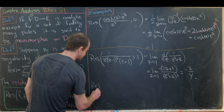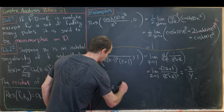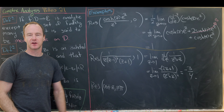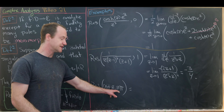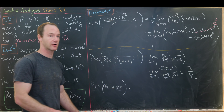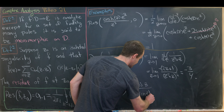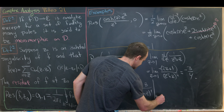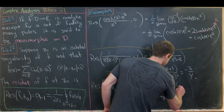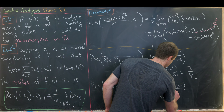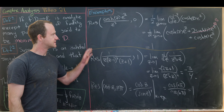Taking that derivative, we get the limit as z → 1 of −(2z+1)/(z²+z)². Plugging in z = 1 gives −3/4. Finally, let's find the residue of cot(z) at nπ. Since cotangent = cos/sin and sin is zero at all integer multiples of π with simple zeros, these are all simple poles. The residue is cos(z) over the derivative of sin(z) evaluated at nπ, which is cos(nπ)/cos(nπ) = 1.